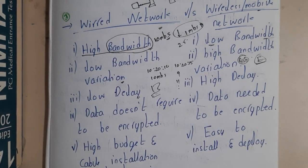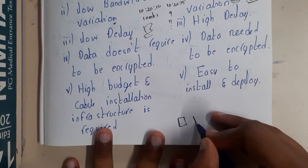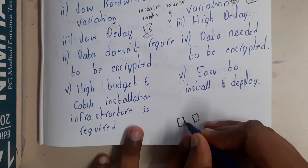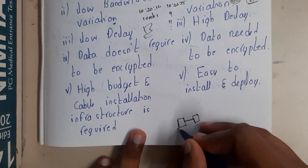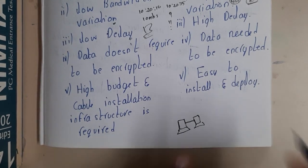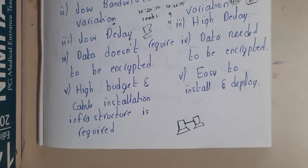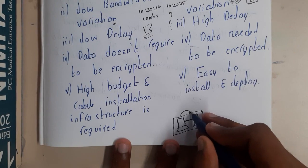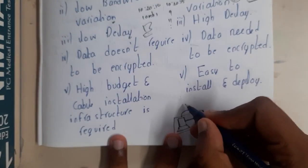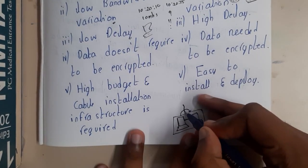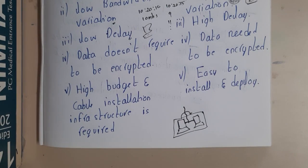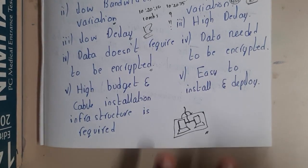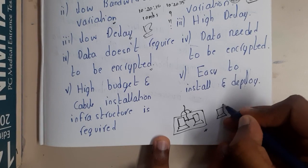In wired, data does not need to be encrypted. Assume you are sending information between two laptops in your home connected by a wire that you set up yourself. In this situation there is no mandatory need to encrypt the data, because there is no risk of someone from outside connecting their wire to your setup — it's inside your home.